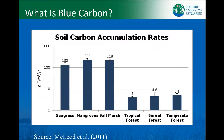Coastal wetlands not only store significant amounts of carbon, but they also sequester carbon at very efficient rates. Noting that this graph has a logarithmic scale, coastal ecosystems can sequester carbon at rates 10 times or more effectively than our terrestrial forests. For the past few decades, terrestrial forests have benefited a lot from their role in mitigating climate change, so our hope is that by recognizing the significant role that coastal wetlands play in sequestering and storing carbon, they can benefit similarly.